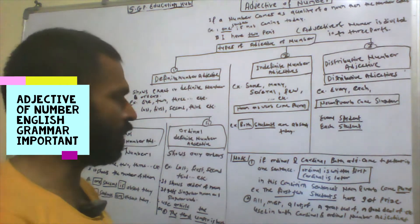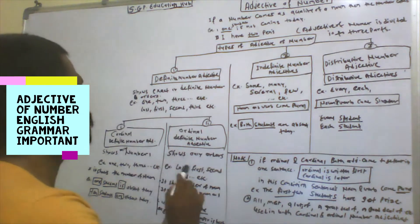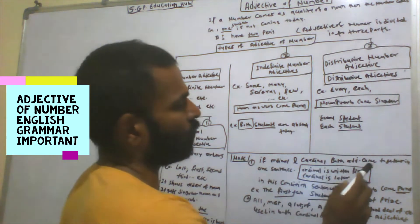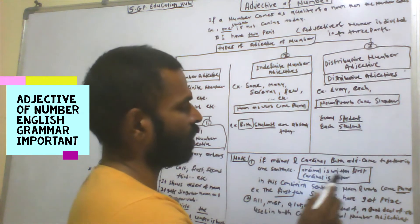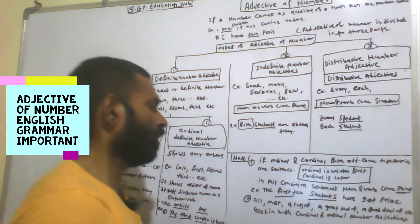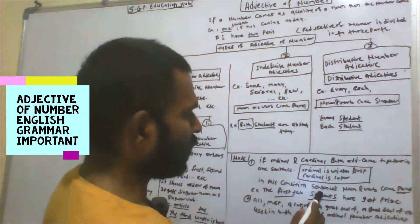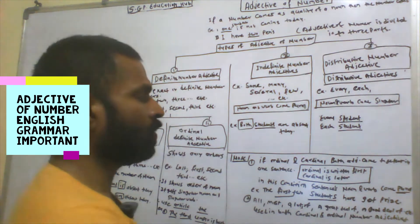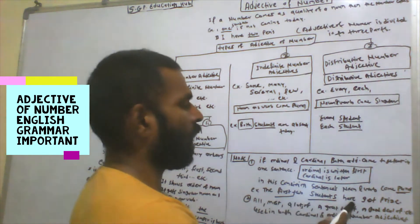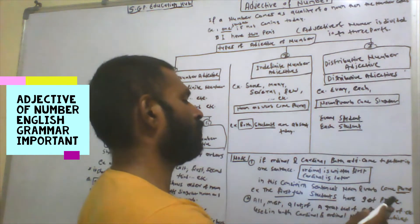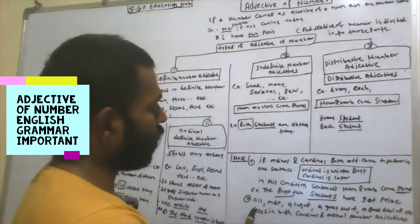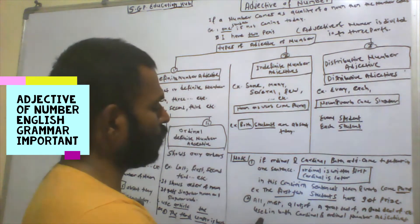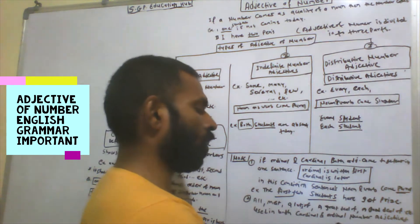An important note: if both ordinal and cardinal definite number adjectives come together in one sentence, the ordinal is written first and the cardinal later. In this condition, the noun and verb come in plural. Example: 'The first two students have got a prize.' Also note: words like almost, a lot of, a great deal of, a good deal of — this type of adjective is used with both cardinal and ordinal number adjectives.